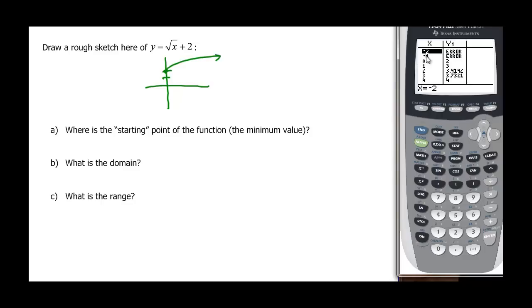Negative 1 is where I have my error. 0 is where I start but it's at 2. So my minimum value here is (0,2).